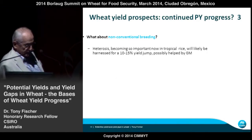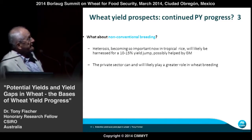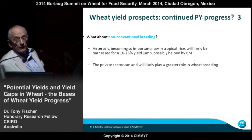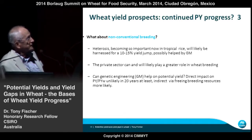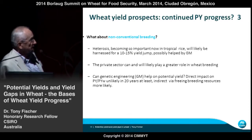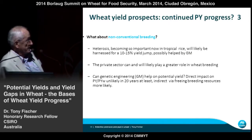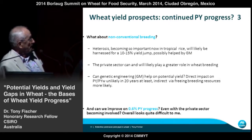Genomic selection could be revolutionary as an aid to yield breeding. There is also untapped wheat genetic diversity in gene banks — difficult and expensive to access, but worth pursuing. For non-conventional breeding, heterosis is likely to happen in the next 20 years and there will be a yield jump. The private sector can and likely will play a much bigger role. Genetic engineering for yield potential won't happen in 20 or even 30 years, but the indirect benefits of molecular biology in freeing up breeding resources to focus more on yield are the biggest benefits in this area.